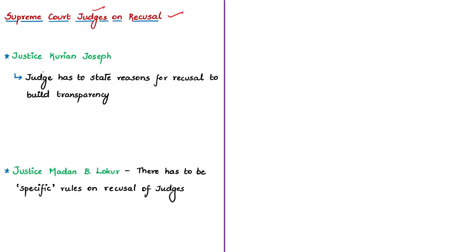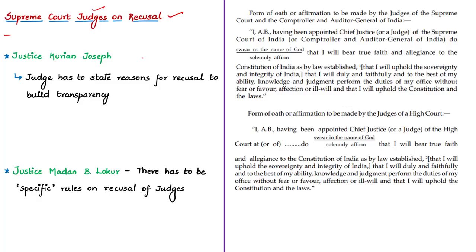Justice Kurian Joseph stated that in order to be transparent and accountable, a judge must state the reasons when they recuse themselves in a particular case. This is important because in some cases a judge could have recused from fear or favor. The Third Schedule of the Indian Constitution, which deals with forms of oaths or affirmations, specifies that judges take oath to perform duties without fear or favor, affection, or ill will.